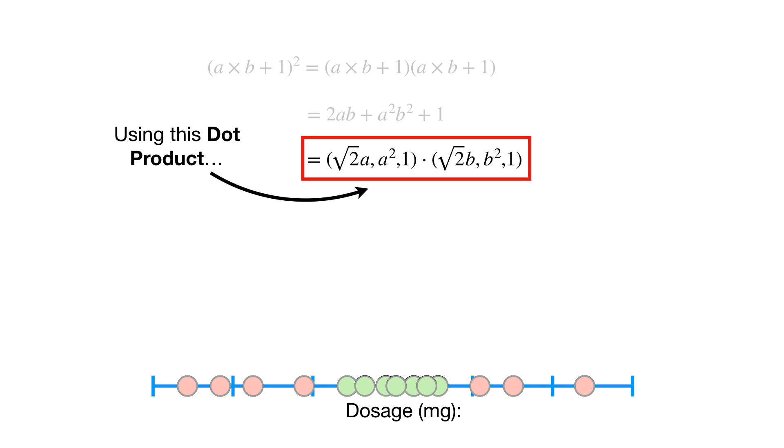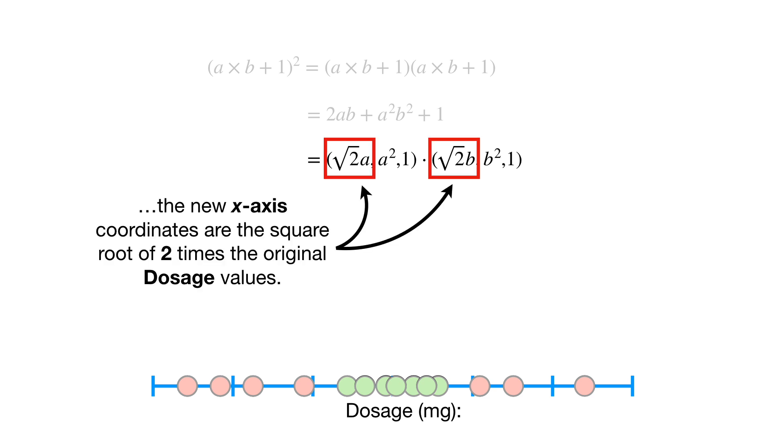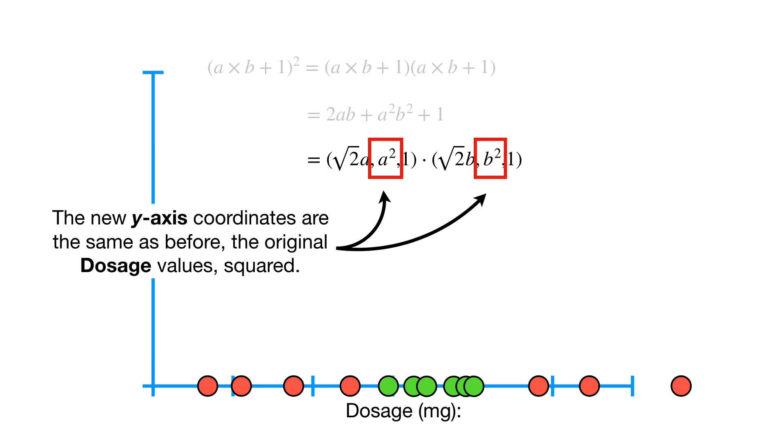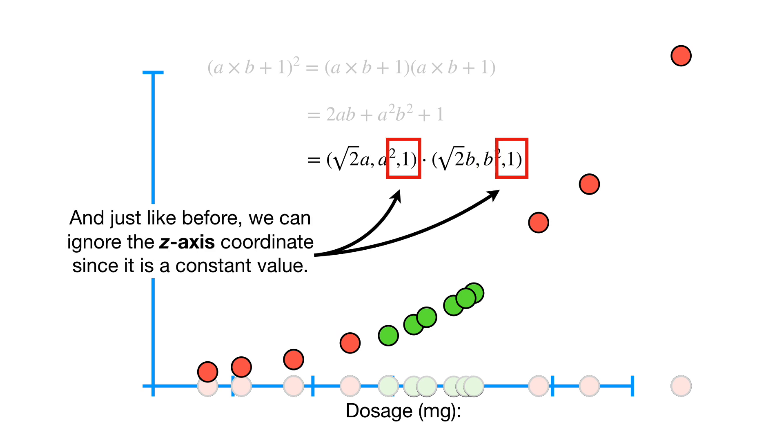Using this dot product, the new x-axis coordinates are the square root of 2 times the original dosage values, so we move the points on the x-axis over by a factor of the square root of 2. The new y-axis coordinates are the same as before, the original dosage values squared. And just like before, we can ignore the z-axis coordinate since it is a constant value.